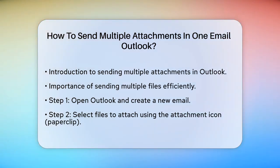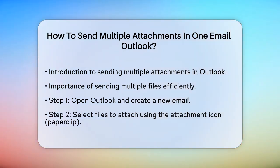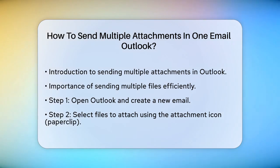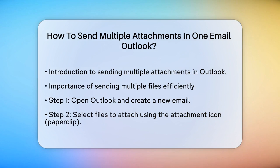First, open Outlook and create a new email by clicking on the New Email button. Now, you need to select the files you want to attach. You can do this in a few different ways. One way is to click the attachment icon, usually represented by a paperclip, in the email editor window.